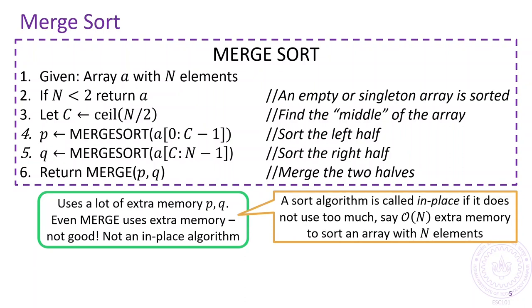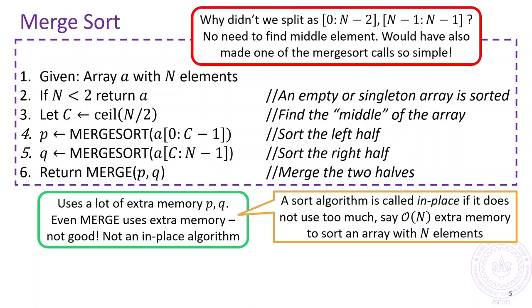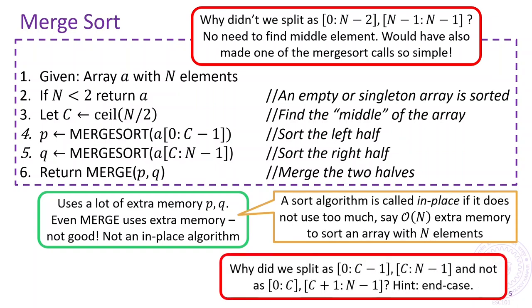You would also notice that merge sort splits the array in the middle before making the recursive calls. Think a bit about why such a choice was made. What would happen if, say, we split the array with n elements into an array with only one element and another one with n minus 1 elements? You also need to keep in mind end cases while deciding where to split the array.